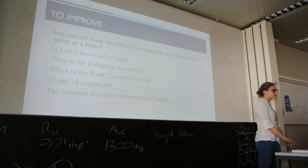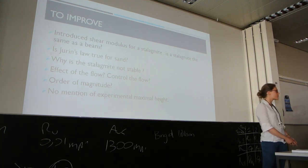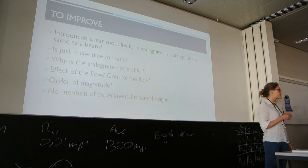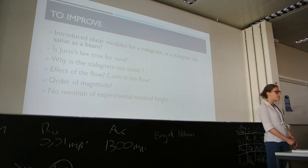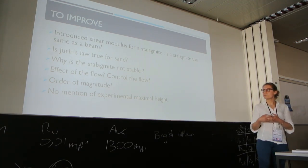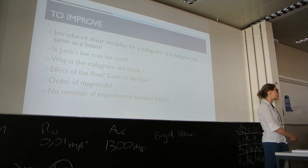There are some points to improve. First, you introduced shear modulus for a stalagmite — but is a stalagmite the same as a beam? Does it work the same way? Is Jurin's law true for sand, or only for a capillary tube? Why is the stalagmite not stable — that wasn't clearly explained. What is the effect of the flow? Did you try to control it? What is the difference in maximum height with different flows? And you didn't mention the experimental maximum height obtained with your setup.